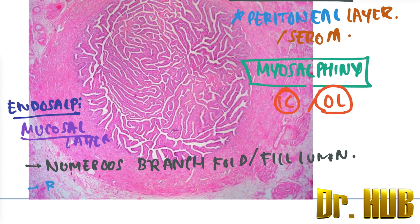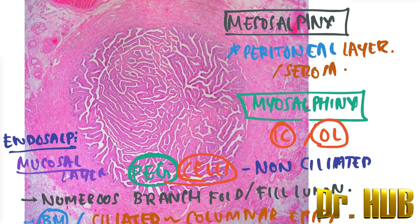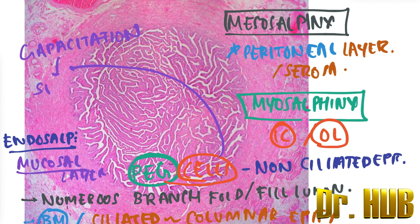The endosalpinx has a basement membrane with ciliated columnar epithelium. There are also peg cells, which are non-ciliated epithelial cells that help in the capacitation of sperms.